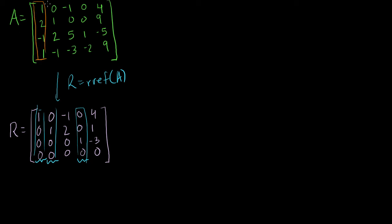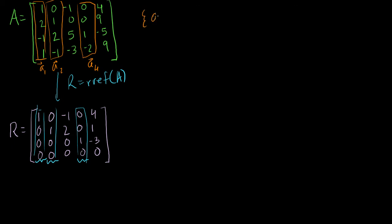So the first, second, and fourth columns are the pivot columns. If we call these A1, A2, and A4 — with A3 and A5 being the others — we can say that A1, A2, and A4 are a basis for the column space of A.